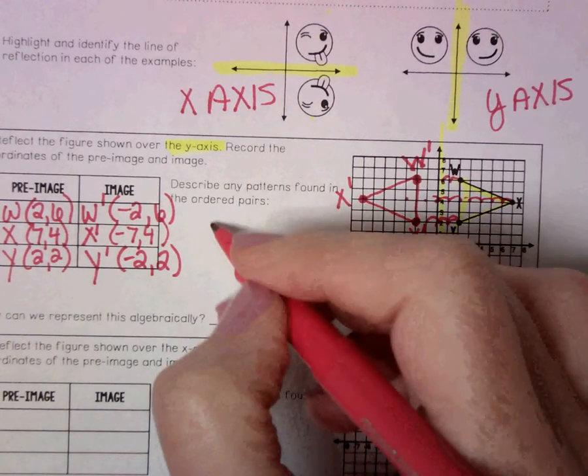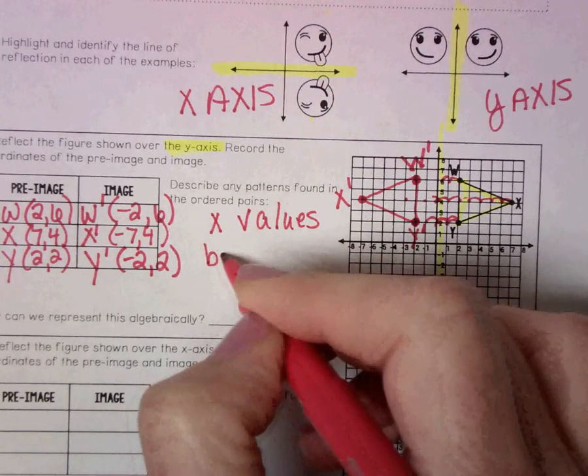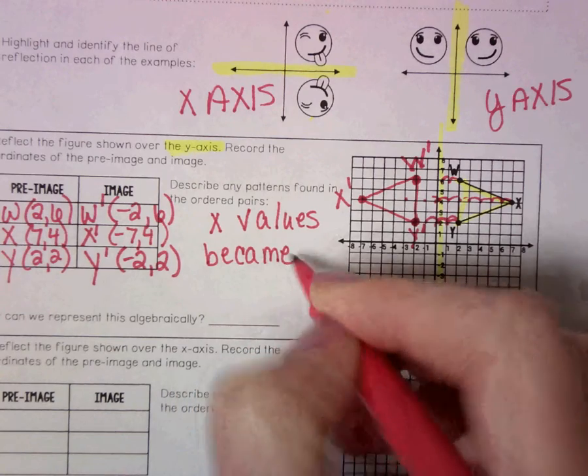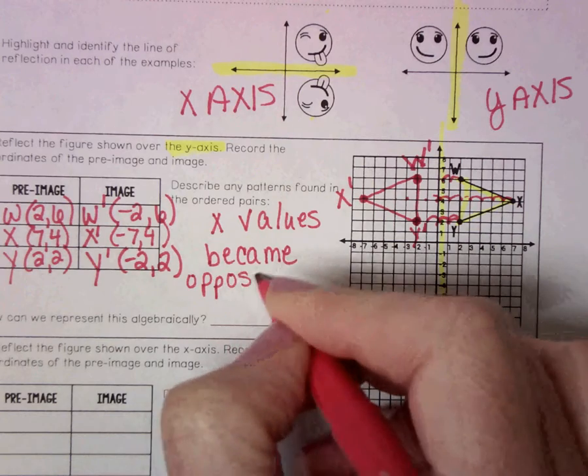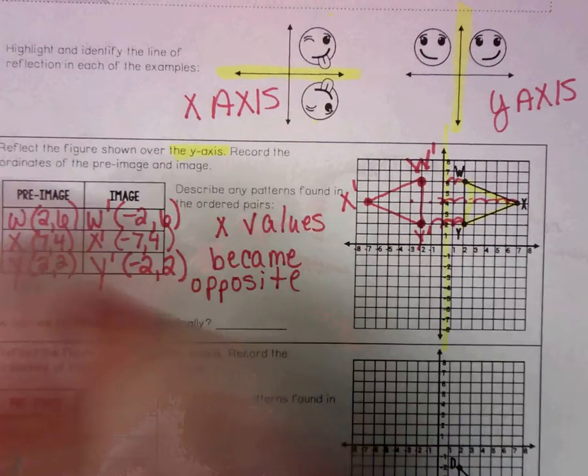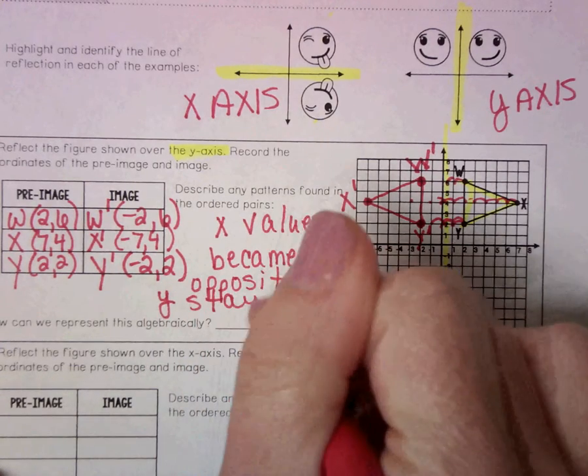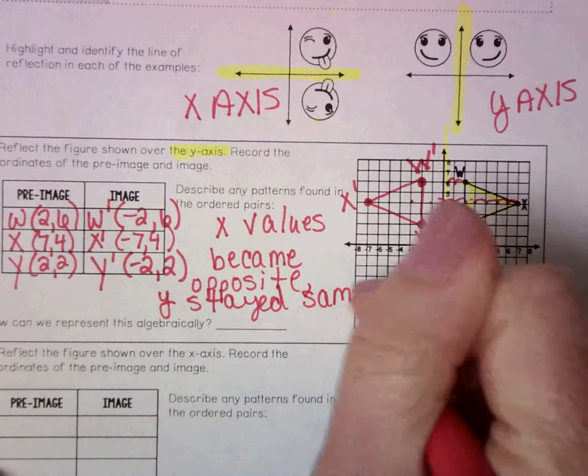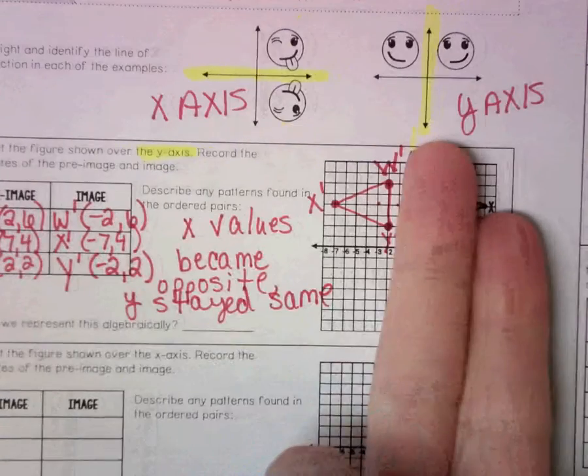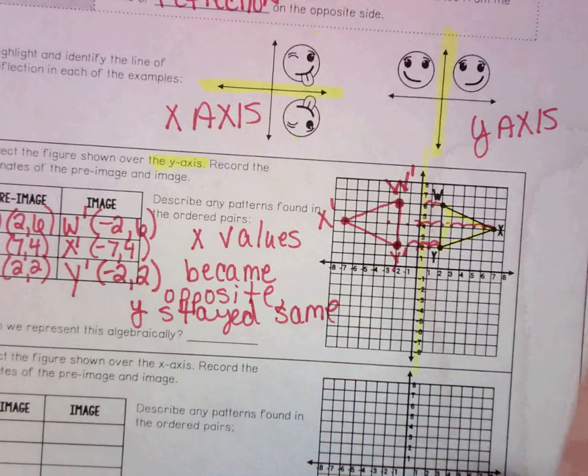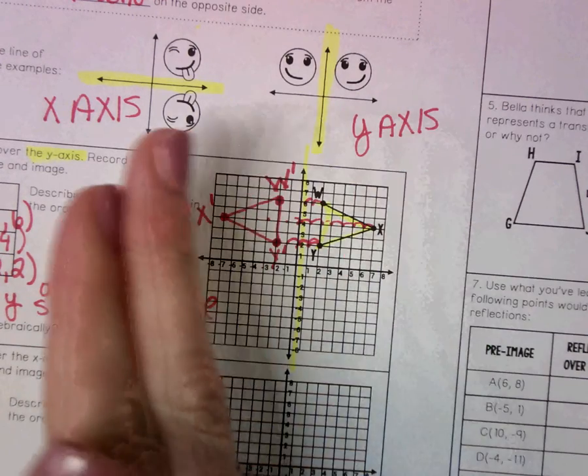Hopefully you noticed that the x values became negative - or I'm going to suggest that the x values became the opposite. It went from positive 2 to negative 2, those are opposites. And the y stayed the same. That's what happens when we reflect over the y-axis. You'll notice only the x value is changing because we're flipping it side to side.